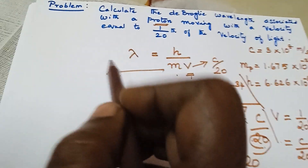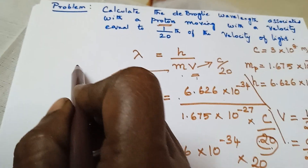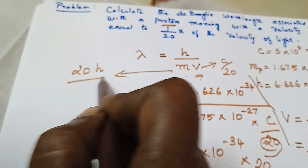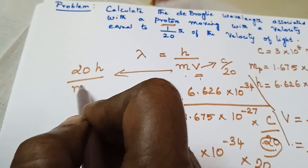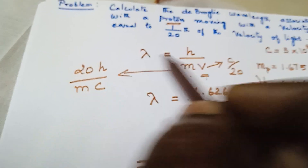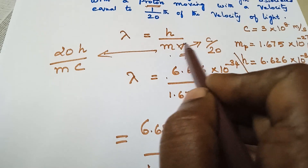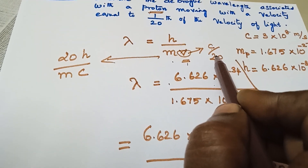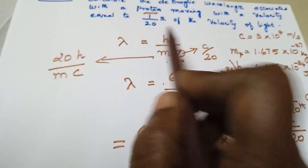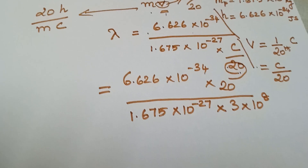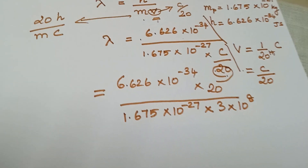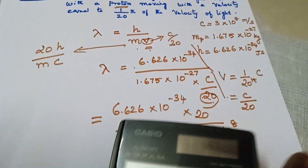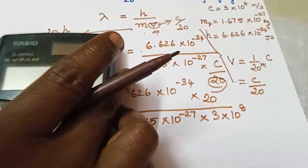So the formula simplifies to 20H divided by M into C, since V is replaced by C/20 and 20 is taken to the numerator. Now, using a calculator we are going to solve this.